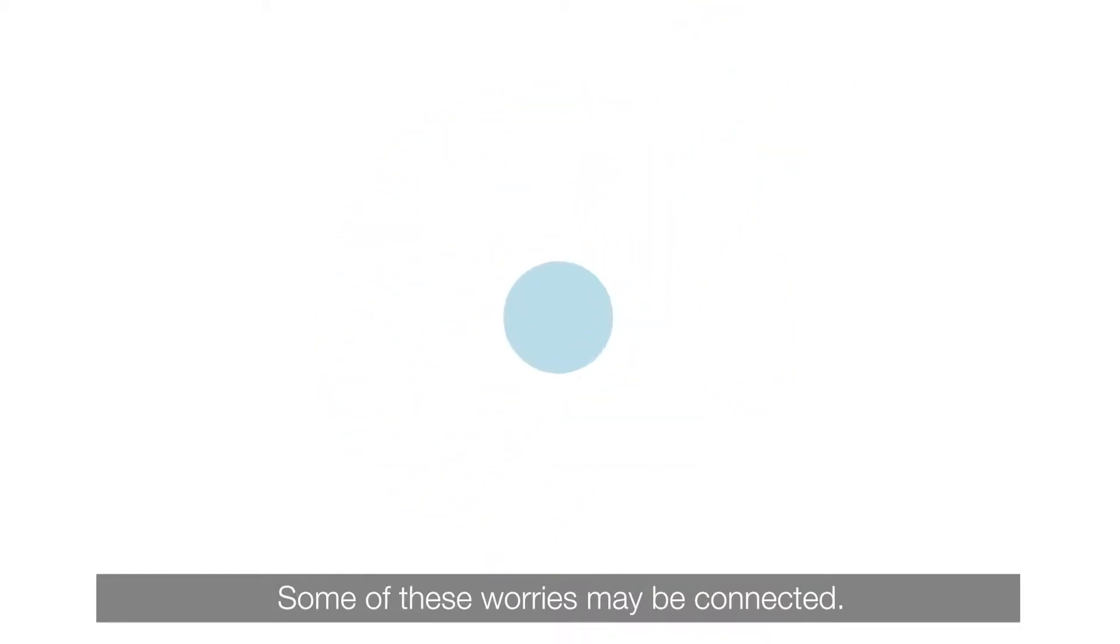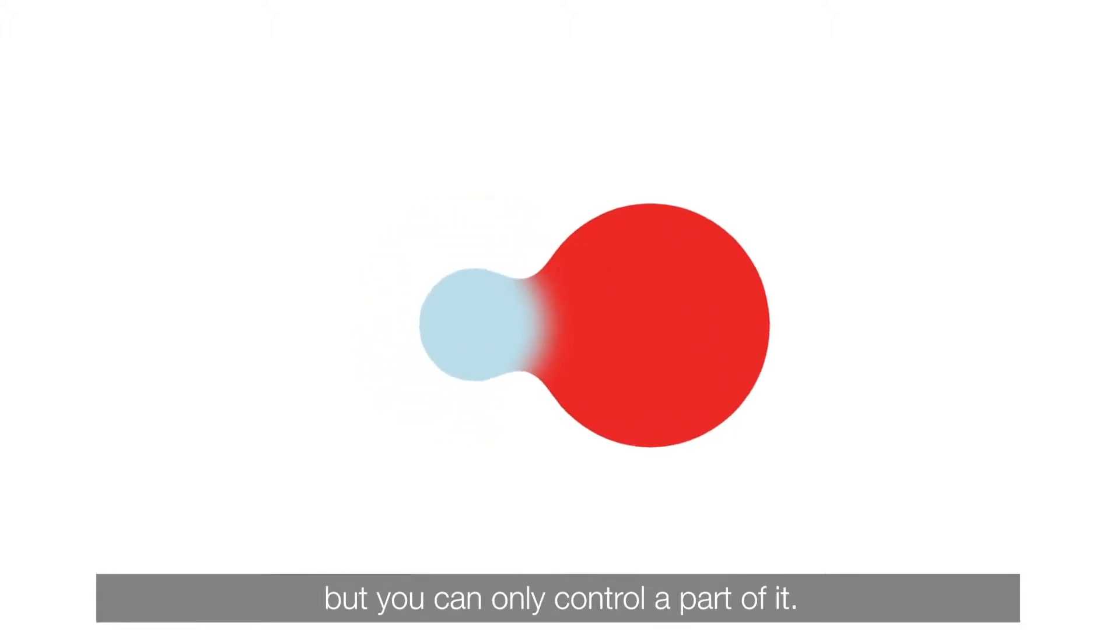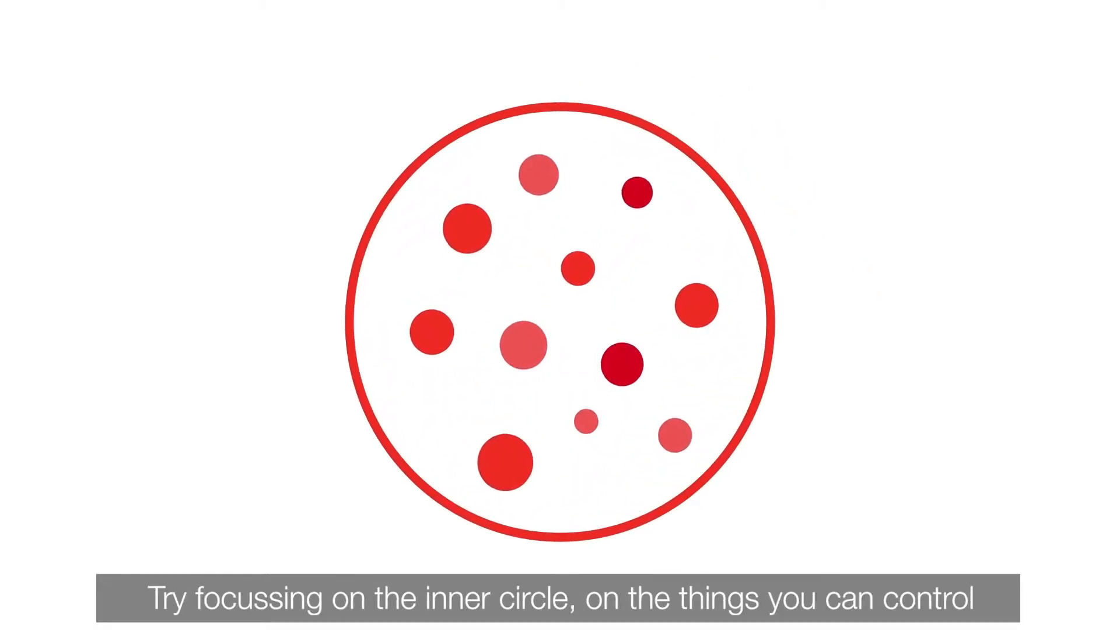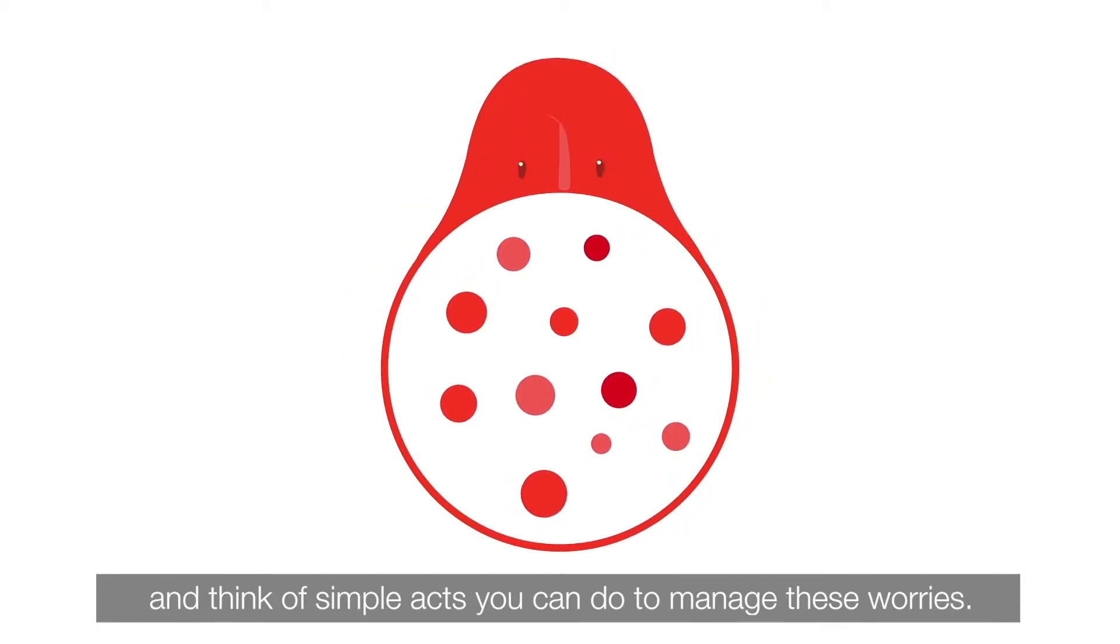Some of these worries may be connected. For example, if you're worried about a big challenge but you can only control a part of it, try focusing on the inner circle, on the things you can control, and think of simple acts you can do to manage these worries.